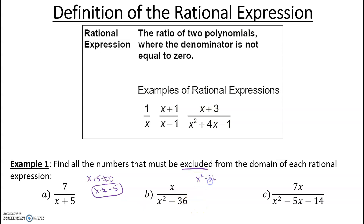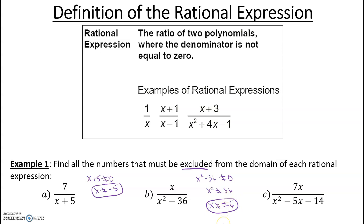Here, X squared minus 36 — my denominator cannot equal zero. Add 36: X squared cannot equal 36, which means X cannot equal positive or negative six.